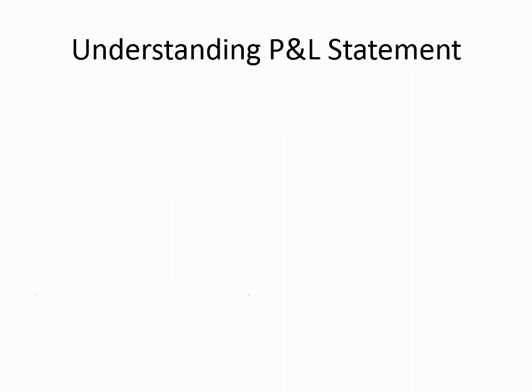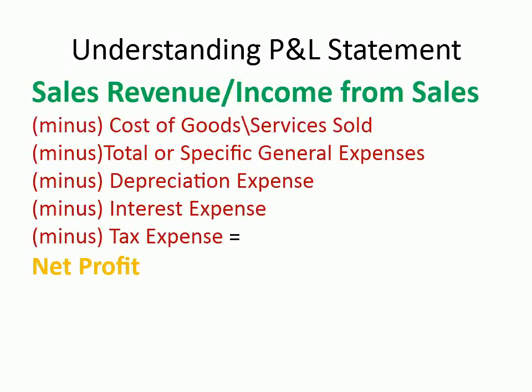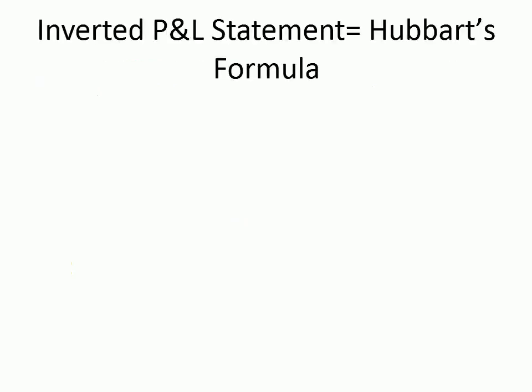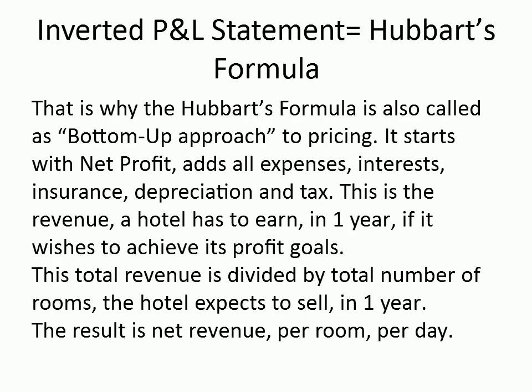Understanding P&L statement: sales revenue or income from sales, minus cost of goods or services sold, minus total or specific general expenses, minus depreciation expense, minus interest expense, minus tax expense, equals net profit. The inverted P&L statement is equal to Hubbard's formula. That is why Hubbard's formula is also called the bottom-up approach to pricing.